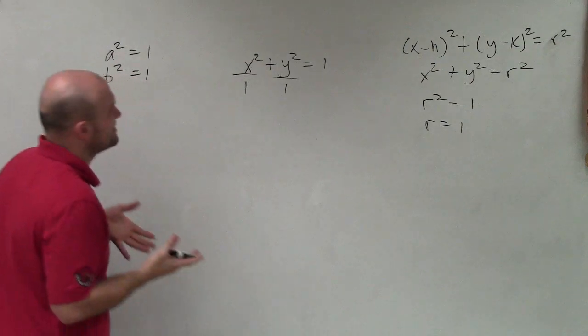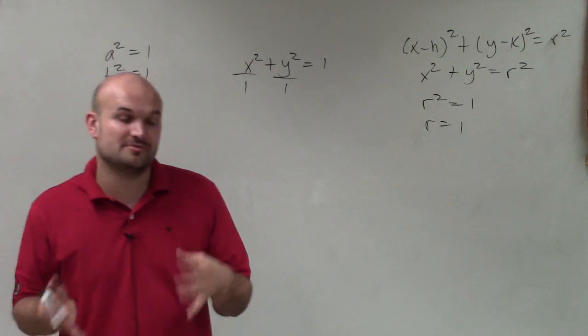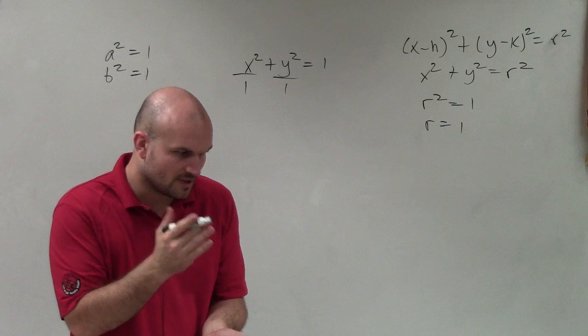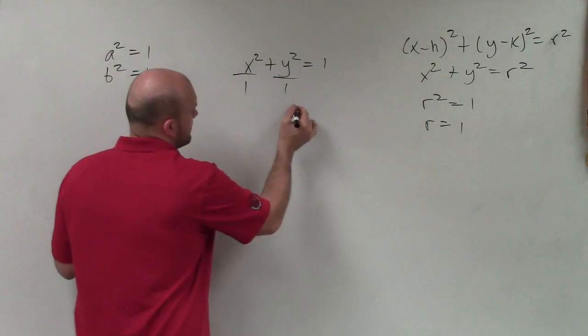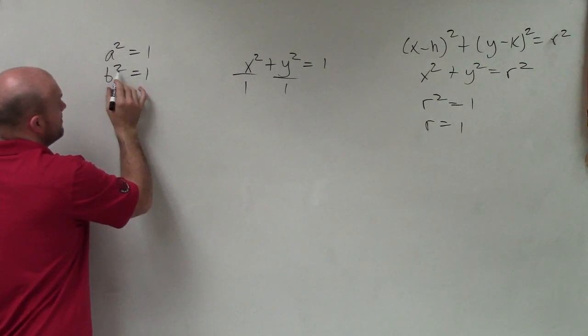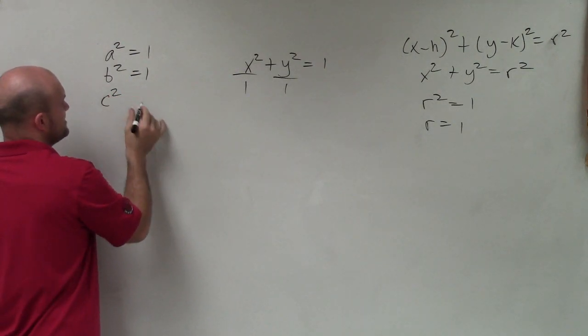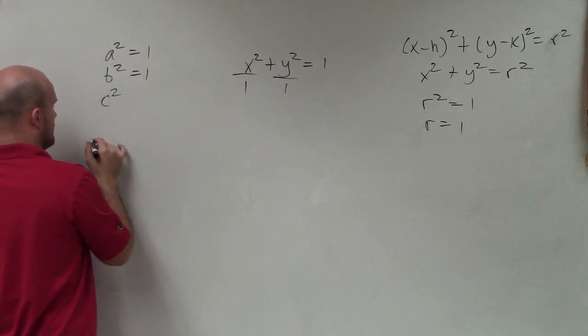So again, we still need to be able to figure out what is going to be our foci, vertices, and co-vertices. So a squared equals 1, b squared equals 1. And then to find c squared, we're going to need to use a formula.